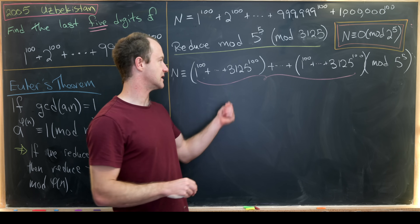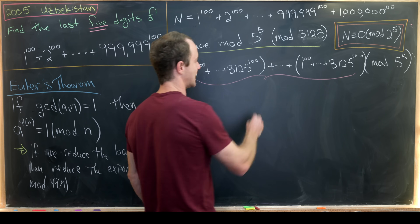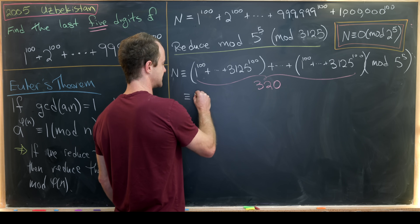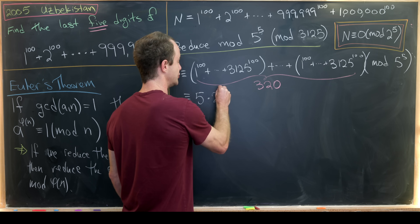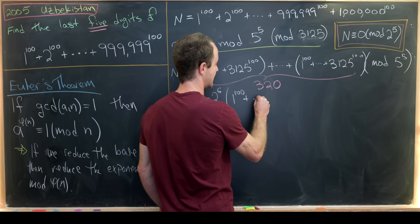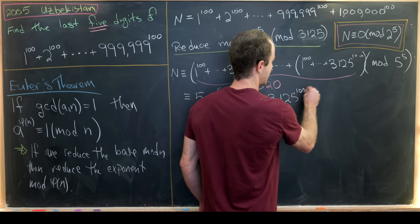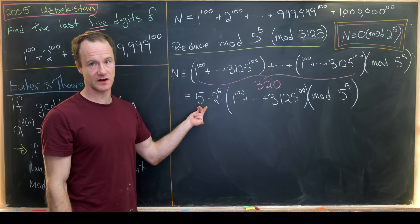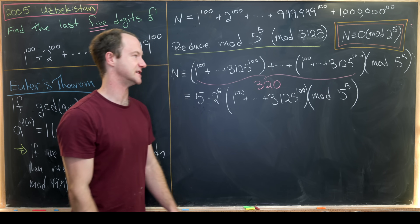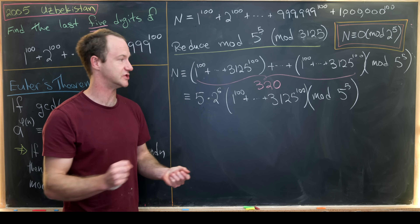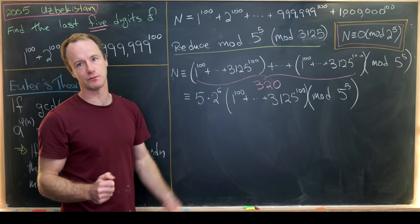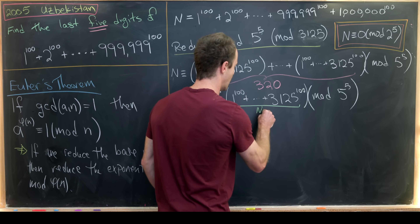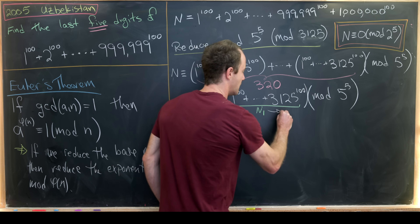There are exactly 320 = 5 × 2^6 occurrences. So we can write N ≡ 5 × 2^6 × (1^100 + 2^100 + ... + 3125^100) (mod 5^5). Since there's a factor of 5 out front, we can look at the sum in parentheses mod 5^4 = 625. Call that sum N1. Since 3125 ÷ 625 = 5, we get five copies of the sub-sum from 1 to 625.